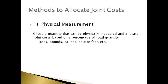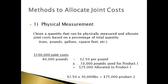There are many different methods that companies can use to allocate joint costs to individual products. We will discuss four of the most commonly used methods. The first method is the physical measurement method. The allocation is based on the physical quantity of the joint product used to make individual products. For instance, a company incurred $100,000 to produce 40,000 pounds of a material. The average cost is $2.50 per pound. Product one uses 10,000 pounds and product two uses 30,000 pounds, and each product is allocated $2.50 for each pound.